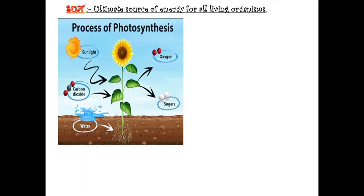Now let us study photosynthesis. The sun is the ultimate source of energy for all living organisms. The process of photosynthesis states that plants make food with the help of sunlight, carbon dioxide, water, and minerals.